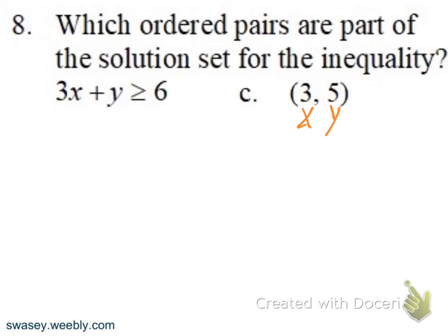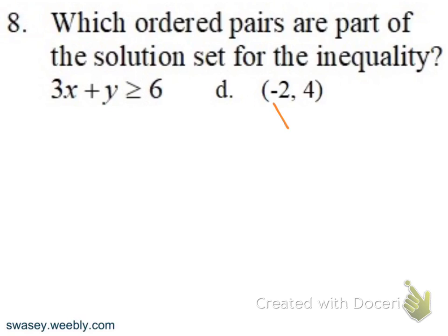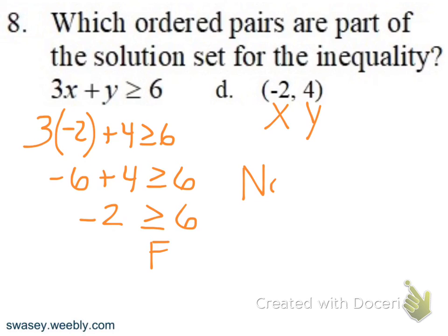For part C: 3 times 3 plus 5. Just deciding if this is true or false — 9 plus 5 is 14. Is 14 greater than or equal to 6? True, so it is a solution. For part D: x is negative 2, y is 4. Multiplying gives negative 6; negative 6 plus 4 is negative 2. Is negative 2 greater than or equal to 6? False — so it's not a solution.